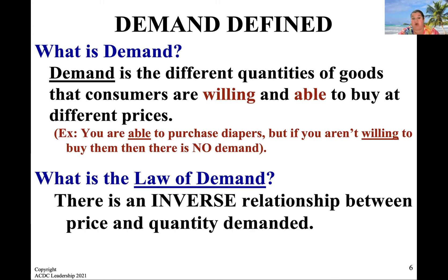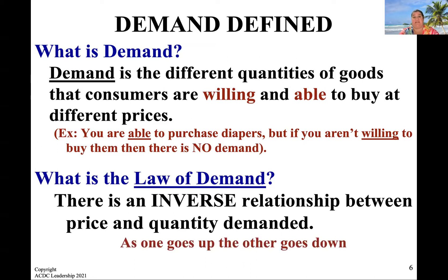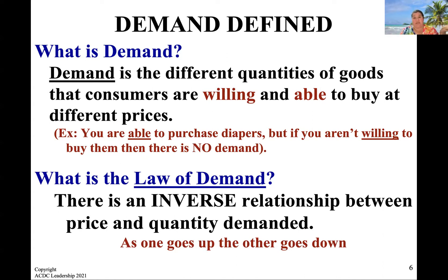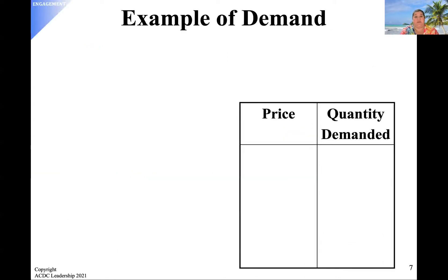Let's talk now about the law of demand. There is an inverse relationship between price and quantity demanded. Basically, as one goes up, the other one goes down. As price goes up, quantity demanded goes down. Kind of makes sense — the more expensive something is, the lower the demand for that item becomes.